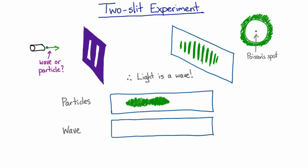And if we put a wave through two slits, we do see an interference pattern. So Young used this to show that light was a wave. But you can also use this to tell whether other things are a wave or not.